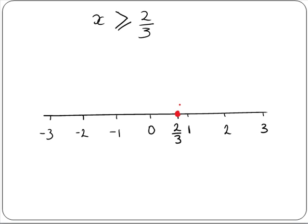Now if 2 thirds wasn't included in our solution, so if it was just x is greater than 2 thirds, we would use an open circle. But because it is greater than or equal to sign, we use a closed circle.